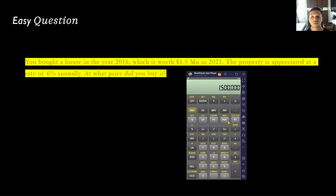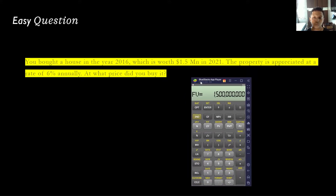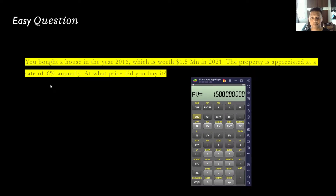Enter 1.5 million and press FV for future value. Since we're talking about future value, we're assuming we will sell the property, so the sign is positive. Note that present value and future value must have opposite signs — one represents investing, the other redeeming. For the rate, just press 6 and then press I/Y, which stands for interest or yield.